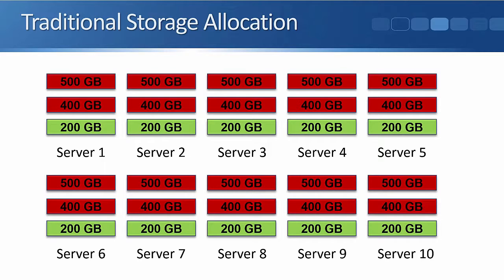And even worse, in the real world we're not going to just have one server. Maybe we've got 10 servers like you see here, and the same situation is happening on all of them. So we really required two terabytes of storage space, but we've ended up paying for five terabytes. That's capital expenditure up front to buy the disks, and they're also taking up rack space in our data center and need power and cooling — so we've got the operational expenses there as well.